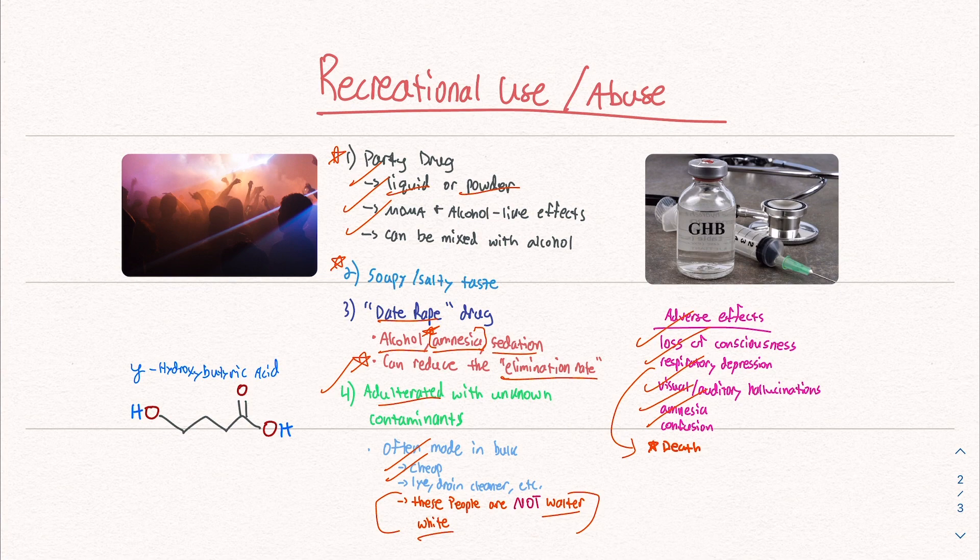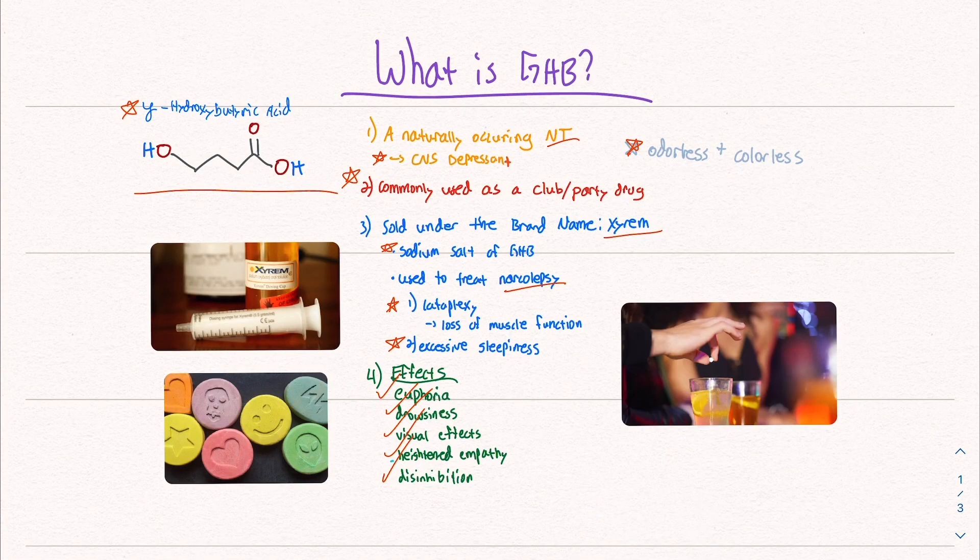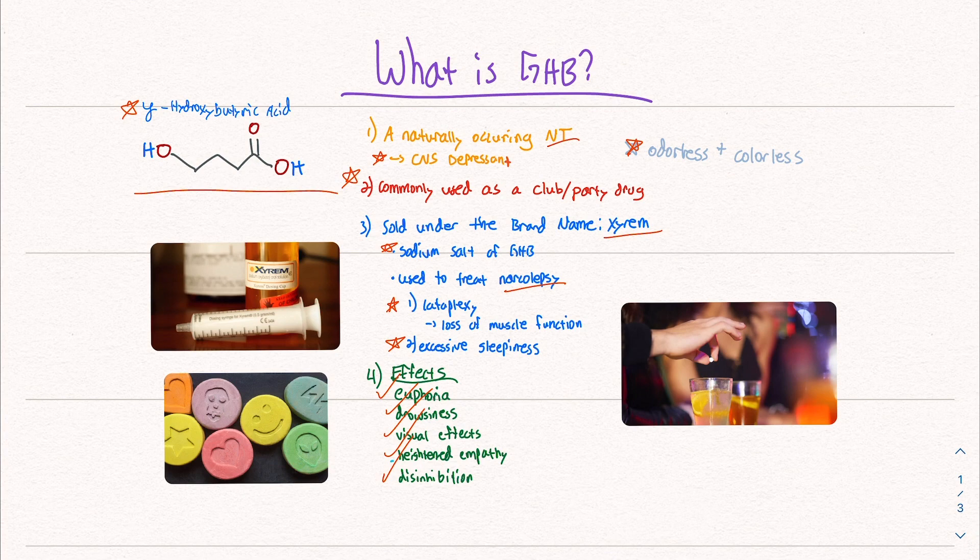So let's go through the summary and review what we learned. We talked about how GHB was a central nervous system depressant. It's used as a party drug. It is sold under the brand name Xyrem and has a whole host of different effects.